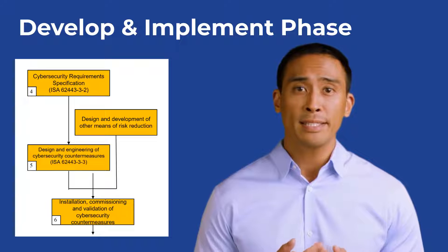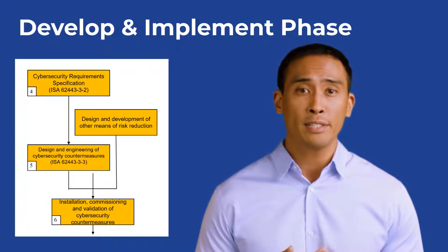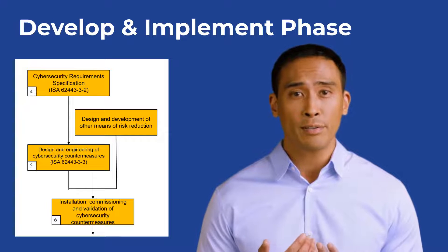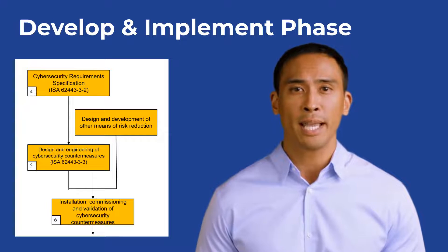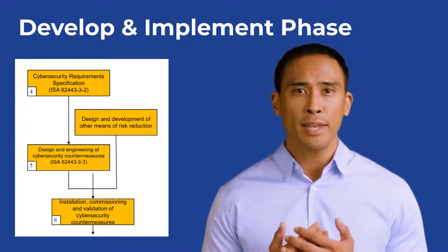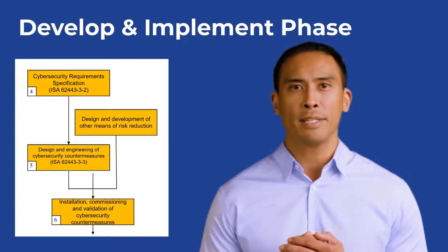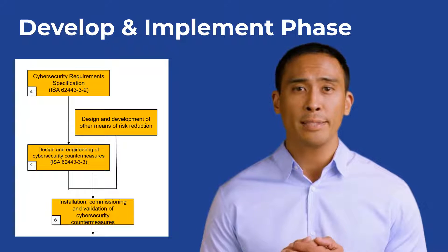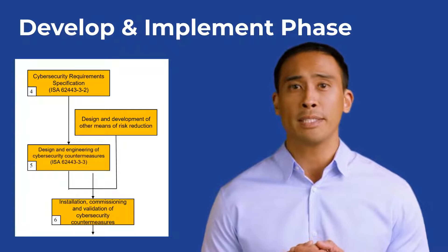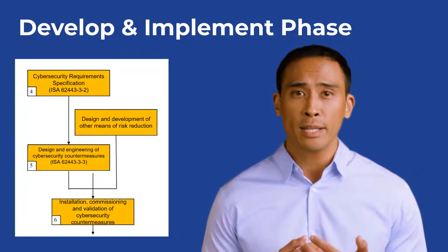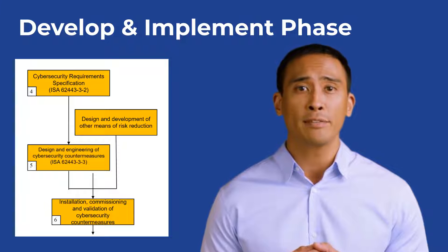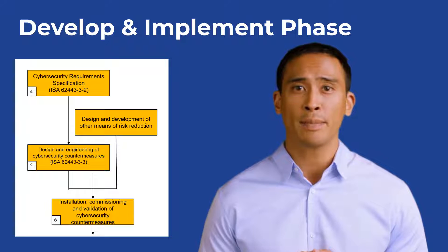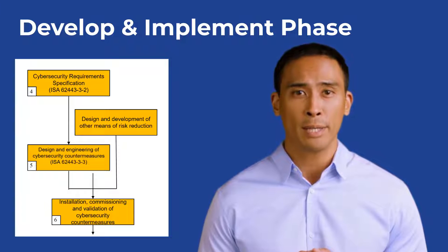ISA Standards 62443-3-2 and 62443-3-3 provide guidelines for the develop and implementation phase. The design and development of other means of risk reduction may also be included.